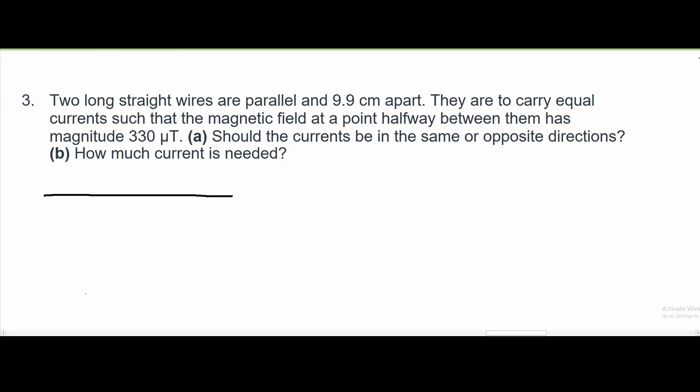Should the currents be in the same or opposite direction? If we first draw our wires, we have the top one and the bottom one. They are at the distance of 9.9 centimeters apart and inside of them, they have the magnitude of 330 micro teslas. Since the currents are equal and we have a magnitude of 330 micro teslas, the currents need to be in opposite directions.